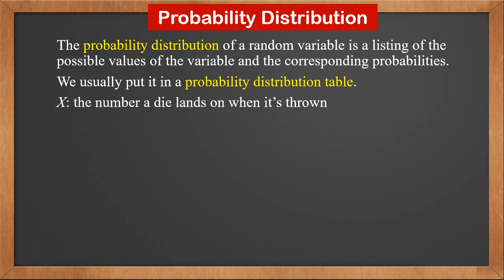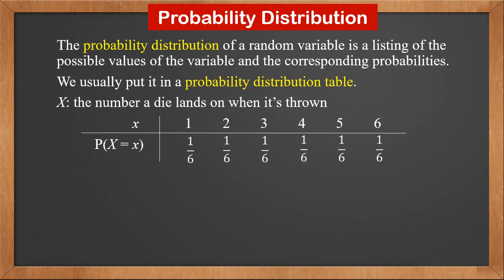For example, random variable X is the number a die lands on when it's thrown. The first row is little x, which can be 1, 2, 3, 4, 5, or 6. The second row is P(X = x), the probability of each possible outcome. We know that they are all 1/6. We can see that the sum of all probabilities in a probability distribution should be 1.